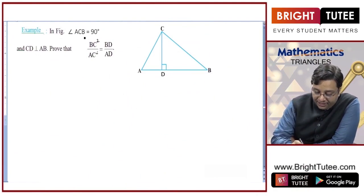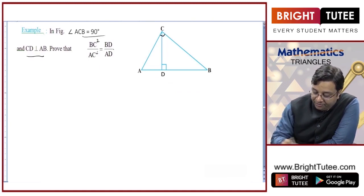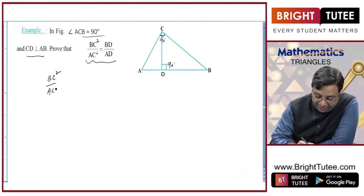In this figure, angle ACB is 90 degrees, and CD is perpendicular to AB, so this angle is also 90 degrees. We need to prove that BC² / AC² = BD / AD.